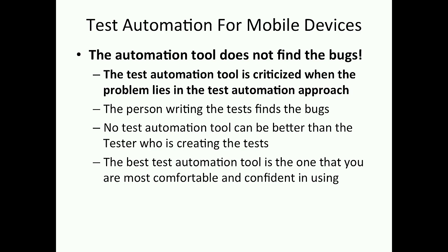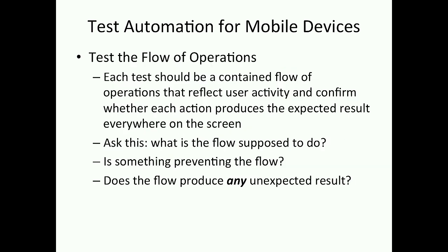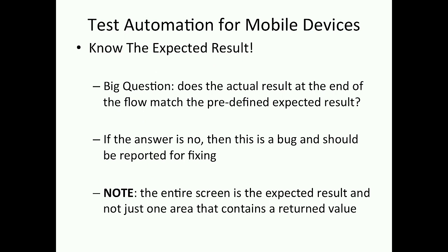There is no one best tool. The best automation tool is the one that you're most comfortable and confident in using. The one I use now is Appium because it is the most stable of the test automation systems and the easiest one to use. You should test the flow of the operation. Before you write your tests — and just in general — keep in mind: what is the flow supposed to do? What's supposed to happen? Is something preventing the flow of operation? And does the flow produce any unexpected results?